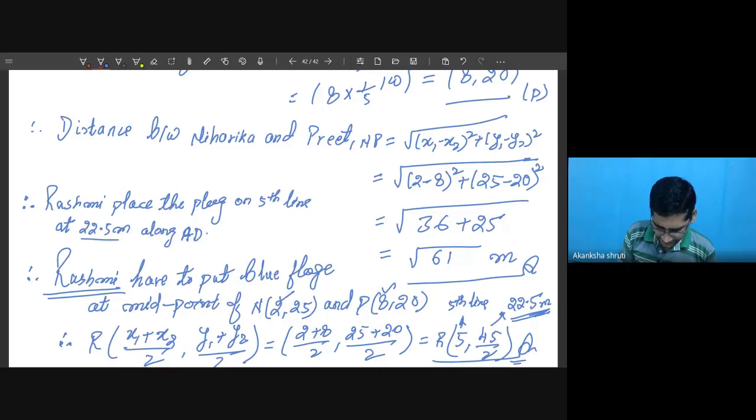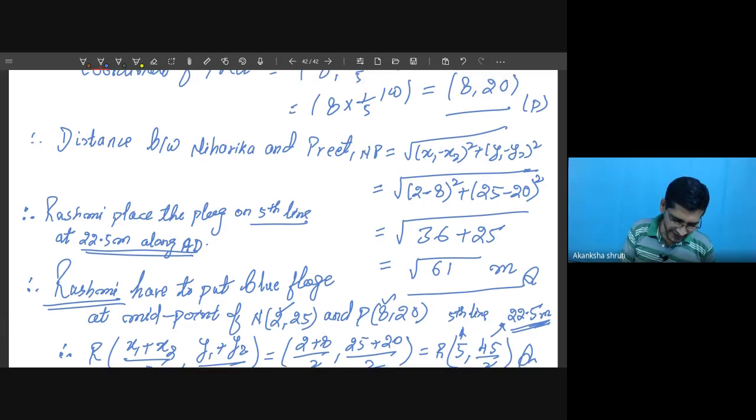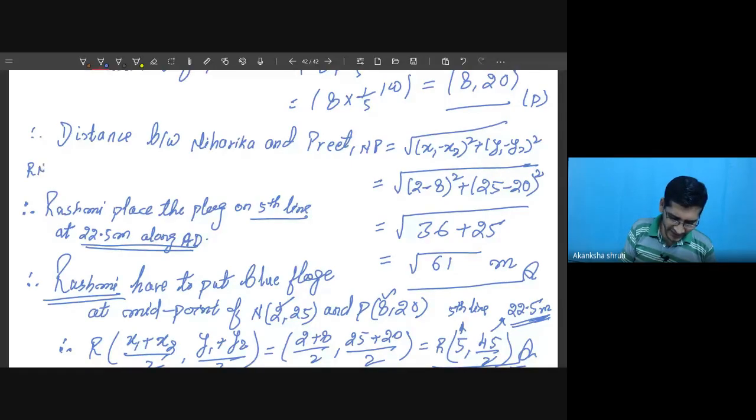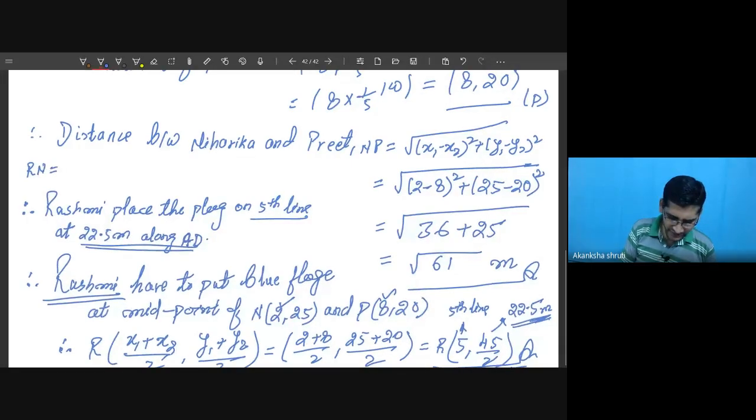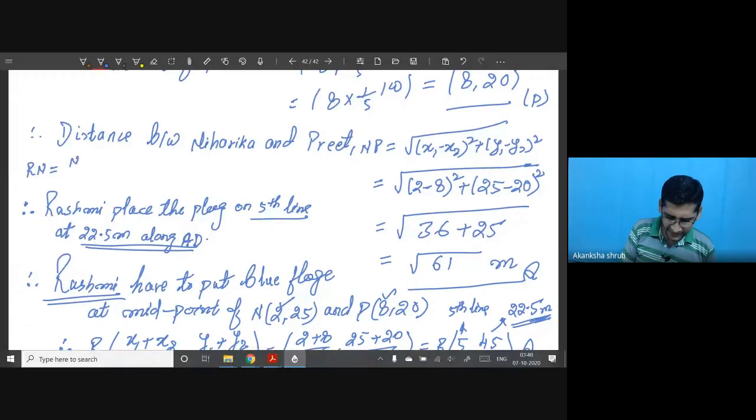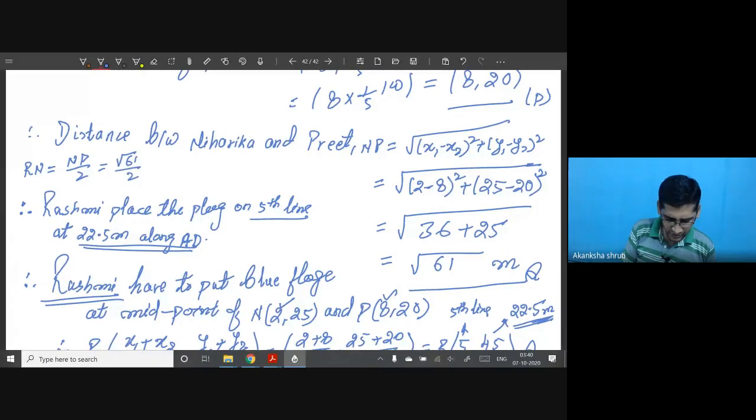Okay students, so you can see on which line to place, along AD how much distance to place, everything can be calculated here. If distance is asked, Rasmi's distance from Niharika, it will be NP by 2, it will be under root of 61 by 2. This is also possible.